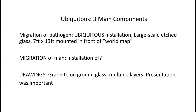The three components I decided to present in this exhibition: first, a large-scale etched glass panel installation — approximately seven feet by thirteen feet — to be mounted in front of some sort of world map, though at the time I didn't know what that would be. I also wanted to address the migration of man through some kind of installation. And I wanted to create drawings with graphite on ground glass of all the pathogens I'd seen in the electron micrographs — I had so many wonderful slides to work from, and that took me several months.